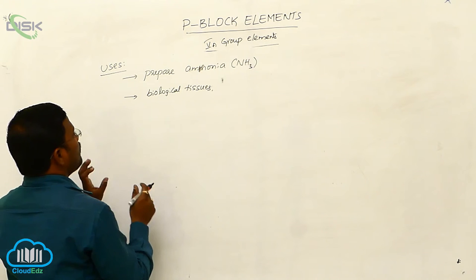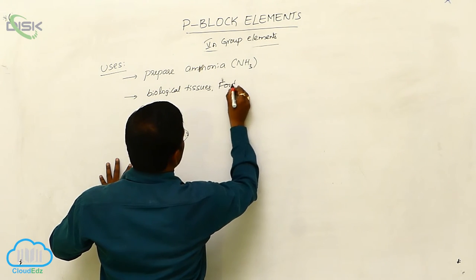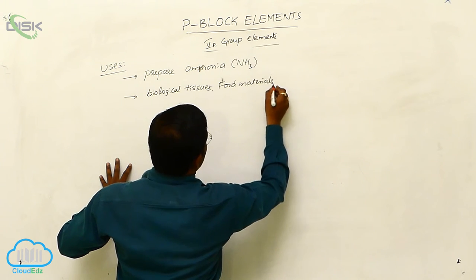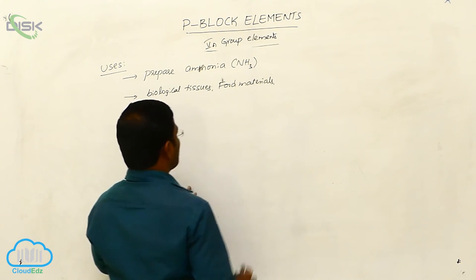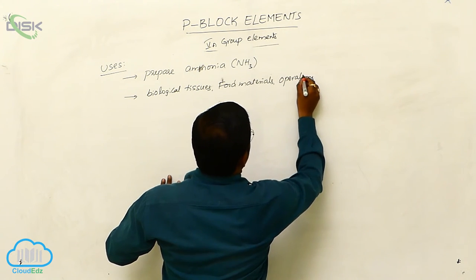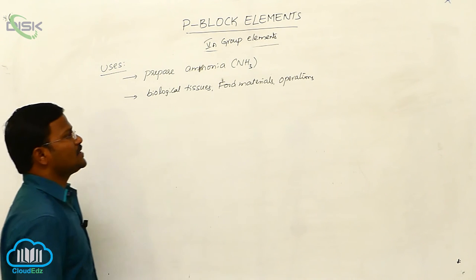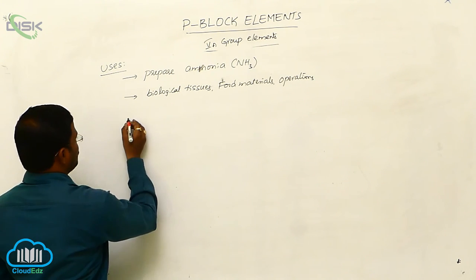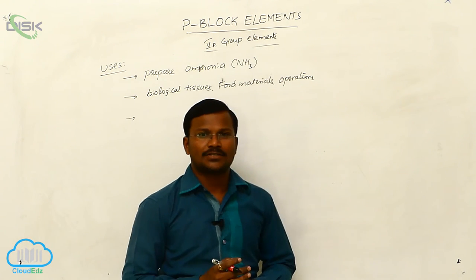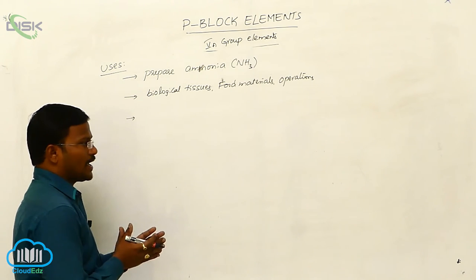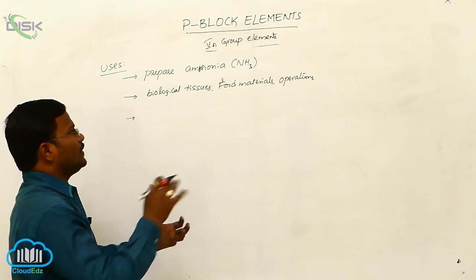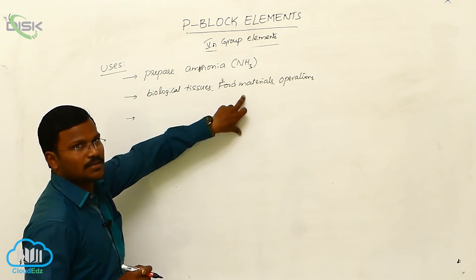And for food materials, and some operations in inert condition or in the absence of oxygen we have to use dinitrogen. Especially in manufacturing of some junk foods like kurkure, the packet is filled with nitrogen gas instead of oxygen.